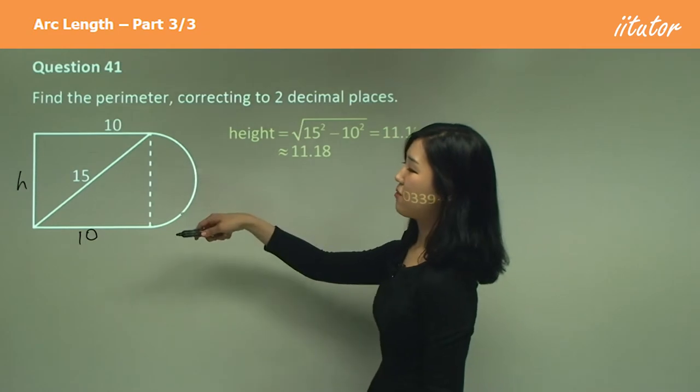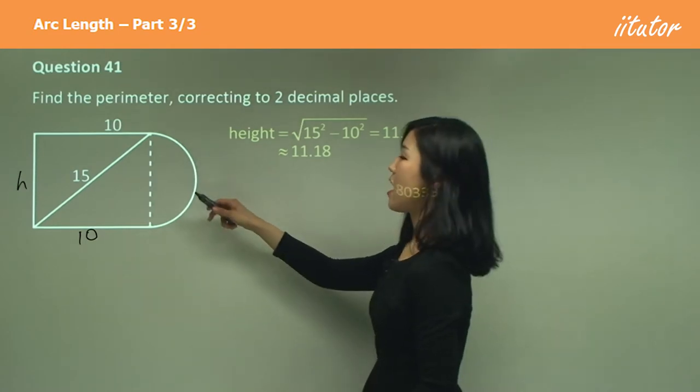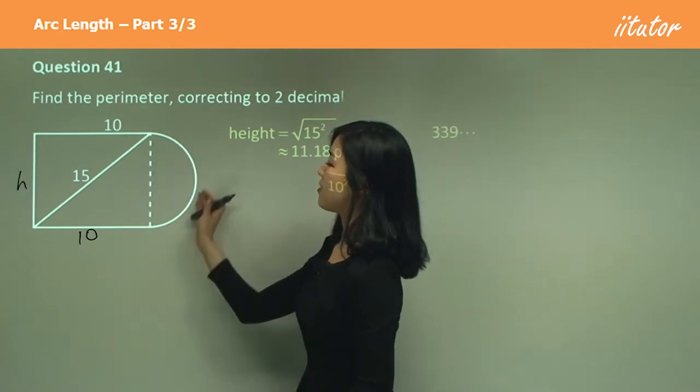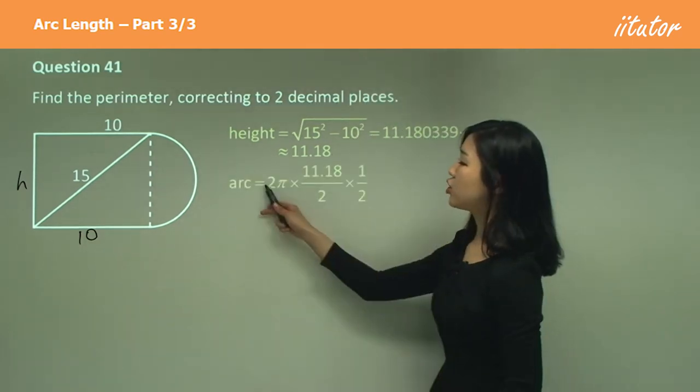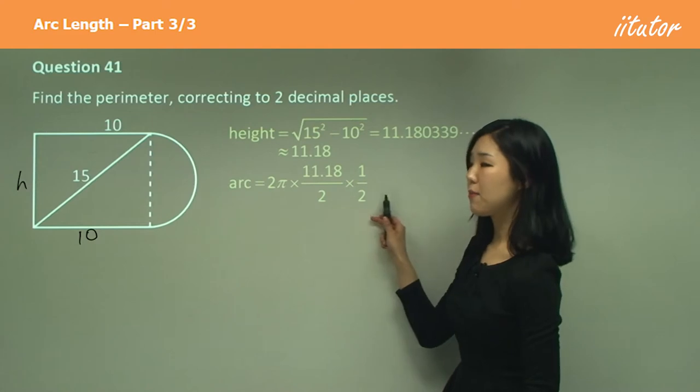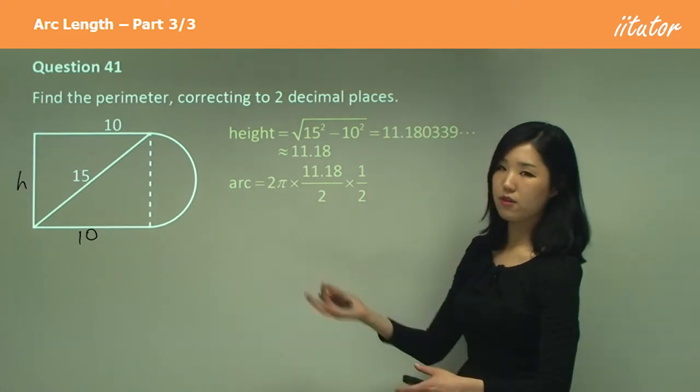So we've got the height now, so we've got one other side. Now all we need to do is find this arc, which is half of a circumference. Arc is 2πr times half because it's a half of a circumference.